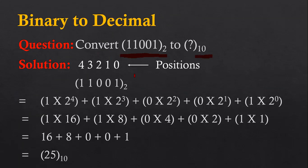First, we have to identify the positions. The rightmost digit, which is 1, is at position zero. Then zero is at position one, the next zero is at position two, then 1 is at position three, and another 1 is at position four.